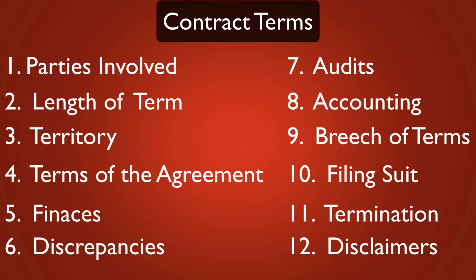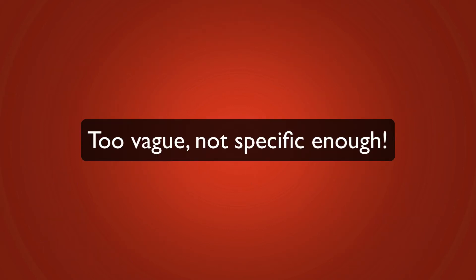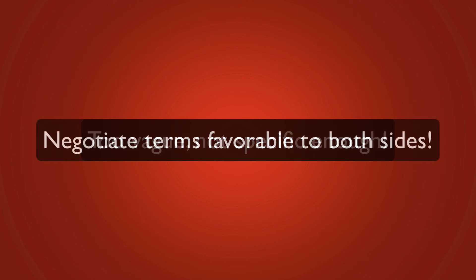There are other common terms, but it depends on the type of contract that you have. There are also things to be careful of, including vague terms — clauses that are not specific. They may state terms, but they can be interpreted too many different ways. You want to look out for things like that. Also, look out for clauses that are favorable to one side. When this happens, you need to negotiate favorable terms for both sides.